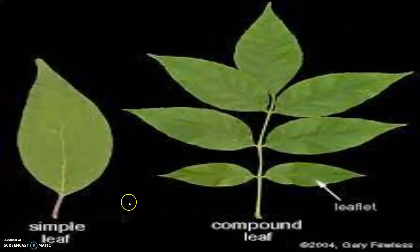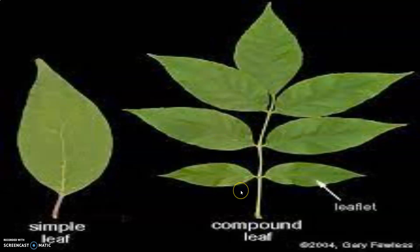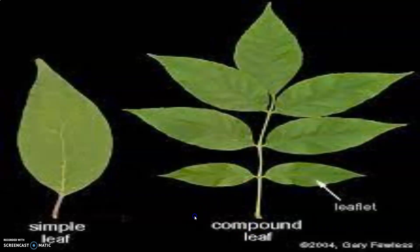Types of leaves. A leaf is said to be simple when its lamina is entire or when any incisions do not touch the midrib. When the incisions of the lamina reach up to the midrib breaking it into a number of leaflets, it is called a compound leaf, and a bud is present in the axil of the petiole but not in the axil of the leaflets. A compound leaf may be pinnate — where leaflets are present on a common axis called the rachis, as in neem — or palmately compound, where leaflets are attached to a common point at the tip of the petiole, as in silk cotton.